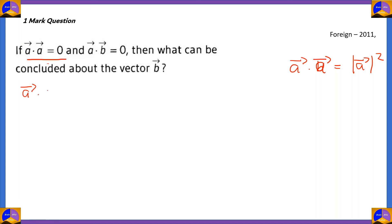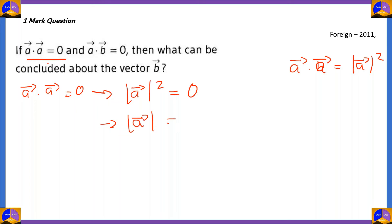If vector a · vector a = 0, then modulus of vector a squared = 0. If the square of the modulus is 0, then the modulus of vector a itself must be 0, since 0² = 0. So we conclude that vector a is a zero vector.